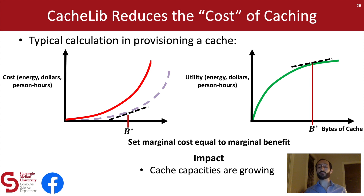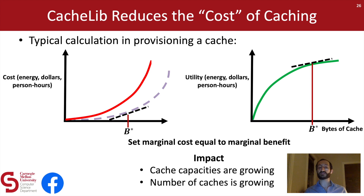What we would predict then is that the cache sizes that people choose to provision would shift out to the right. And in fact, we have seen this at Facebook — the impact of deploying CacheLib has been a general increase in cache capacities. Equally important, we've seen the number of caches grow at Facebook because caches which used to not be feasible from a cost standpoint are now enabled by the deployment of CacheLib.